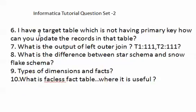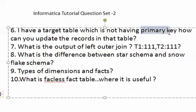I have a target table which does not have a primary key. How can you update the required records in that table? How are you going to update a table that doesn't have a primary key?